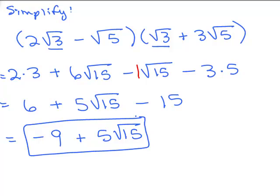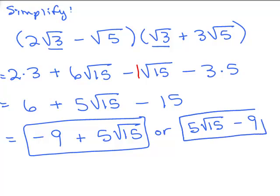6 minus 15 is negative 9, plus 5 square roots of 15. You don't have to write it like that — you can use the commutative property and write 5 square roots of 15 minus 9, but make sure your minus sign is not underneath that square root. Both are acceptable, and you cannot combine it any further because the 9 does not have the square root of 15 with it.